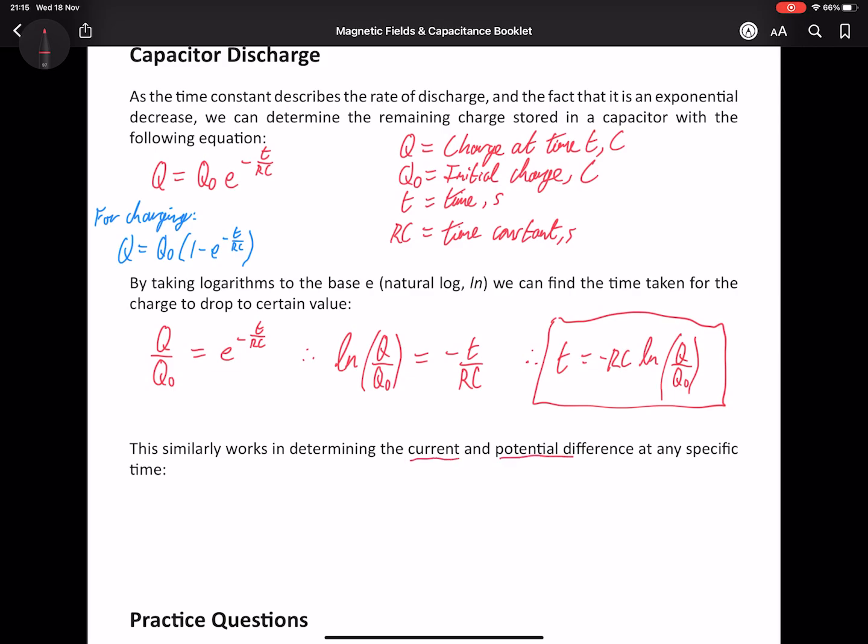Similar to the radioactivity topic, you are given one version for charge, but you can also use this equation structure for both current and potential difference. So, I equals I0, E to the minus T over RC, and V equals V0, E to the minus T over RC. Very easy to use, you just need to remember that they are also applicable.